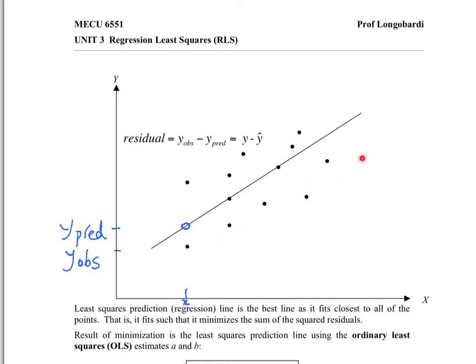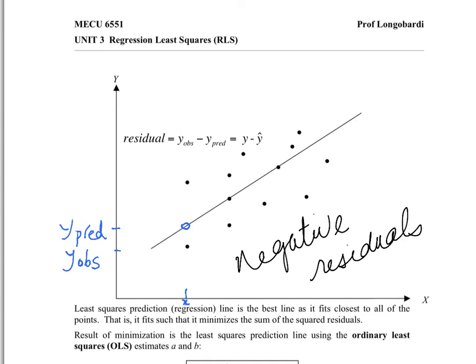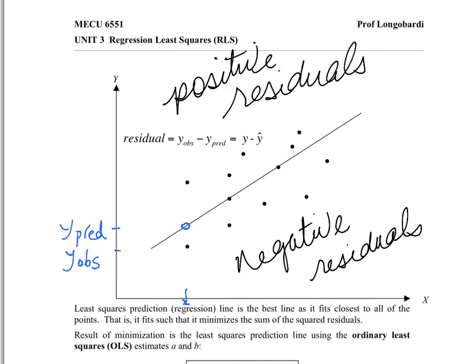All of the points for observations below the line will have negative residuals. Above the prediction line, the residuals will be positive. If we were to calculate residuals for all the observed values, there's a residual for each one. If this was the least squares regression line, the residual for a point on the line would be zero. You can imagine strings to the line — these red lines represent the residuals, the length of the residuals.